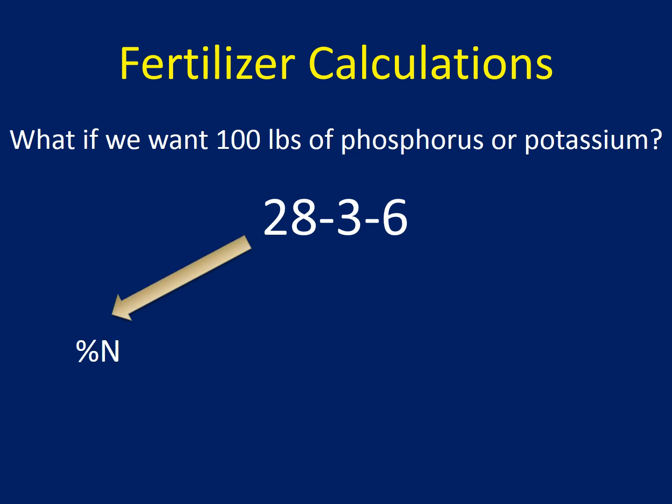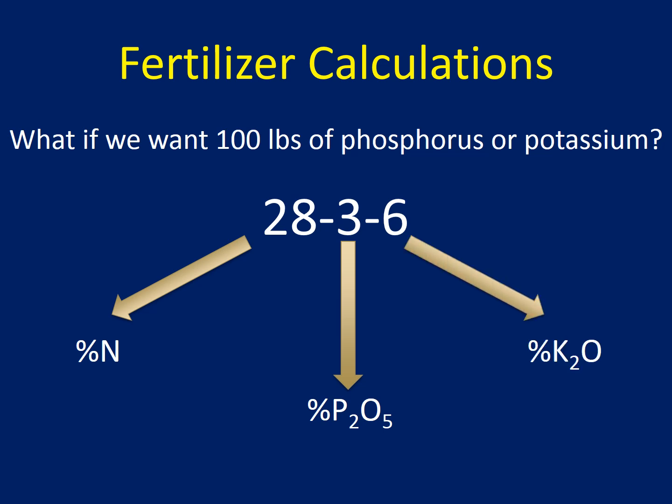With nitrogen it was straightforward because the 28 directly represented 28% nitrogen. For phosphorus, the 3% shown actually represents the percentage of P2O5 — so it's not percent phosphorus, it's percent P2O5. Similarly, the 6% for potassium doesn't represent percent potassium but percent K2O.